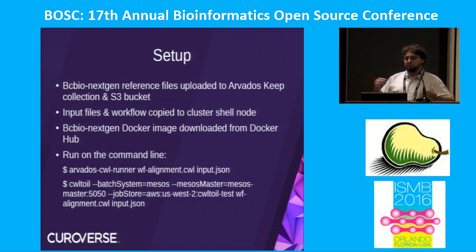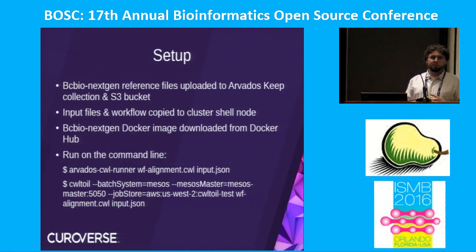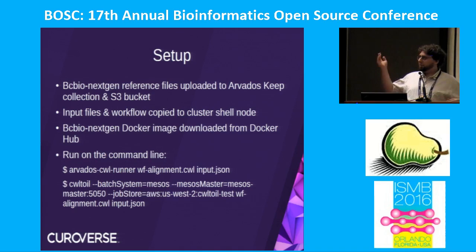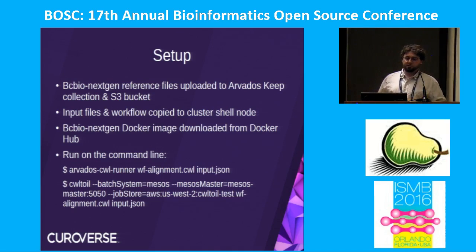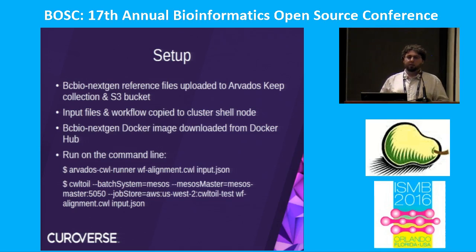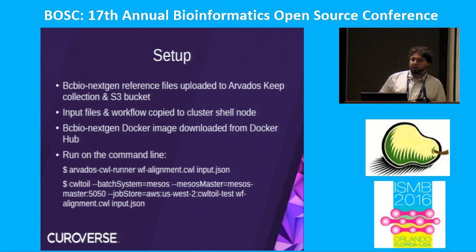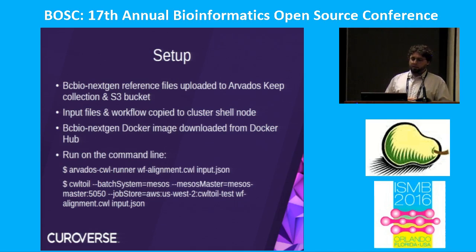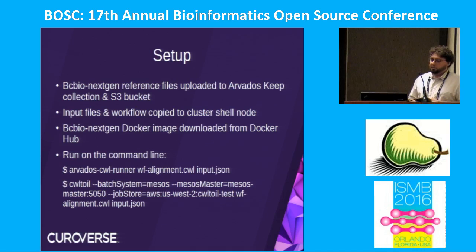For the experiment setup, we needed to upload the files. BCBio Next Gen has about 50 gigabytes of reference files, which we uploaded to an S3 bucket and also to Arvados. The actual input FASTQ files and workflow files were copied to a cluster shell node, and we pulled the Docker image from Docker Hub.